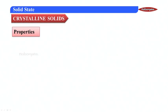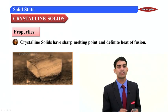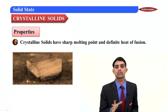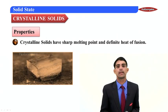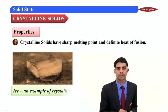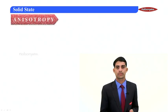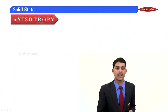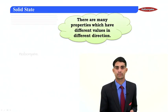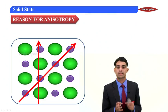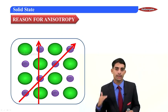Now, the properties of crystalline solids. The first property is that crystalline solids have a sharp melting point and definite heat of fusion. Why? Because the strength of all the bonds between the particles are equal, therefore crystalline solids have a sharp melting point. Ice is an example of a crystalline solid — its melting point is zero degrees Celsius. The second property is anisotropy: many properties have different values in different directions, such as thermal conductivity, electrical conductivity, refractive index, and mechanical strength, which are different along different directions.